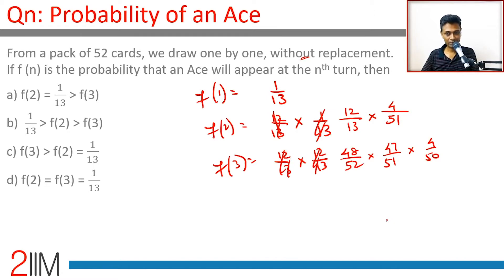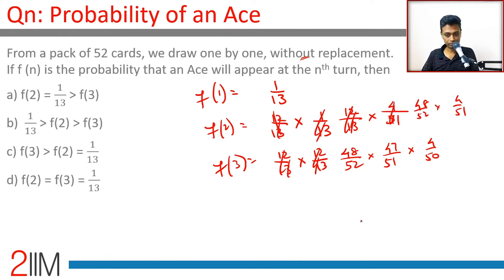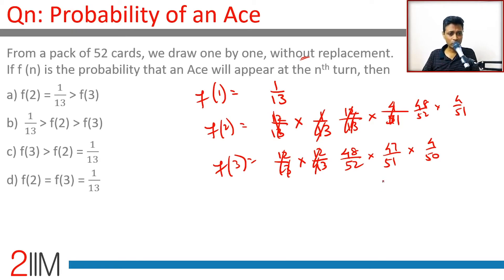So f(1), f(2), f(3) — we keep going step by step. Let me write f(2) as 48 by 52 into 4 by 51, and f(3) as 48 by 52 into 47 by 51 into 4 by 50.